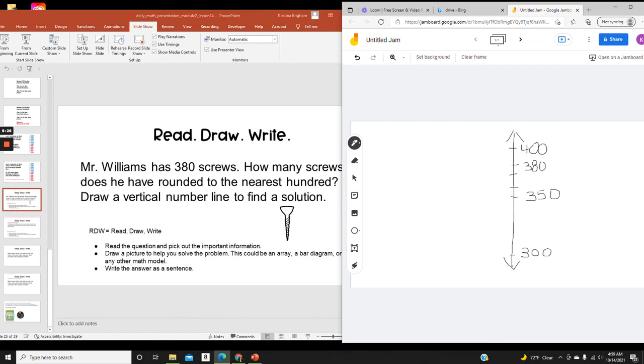And my question is, how many screws does he have rounded to the nearest 100? Since 380 is closer to 400, I'm going to round up to 400. I've completed my drawing.